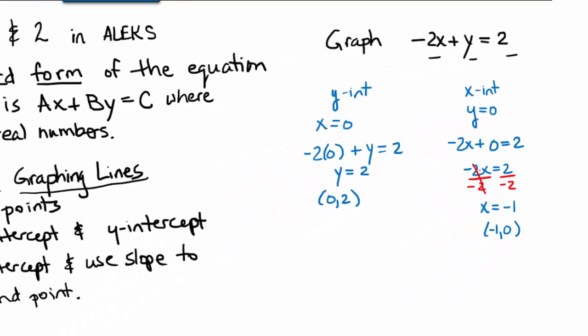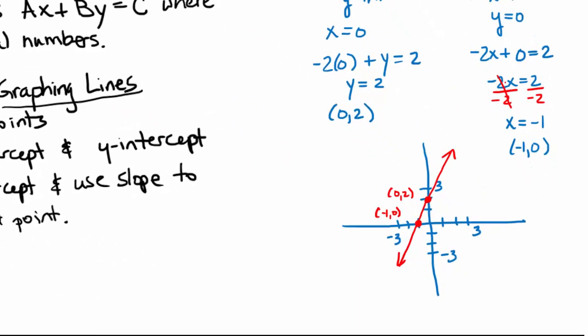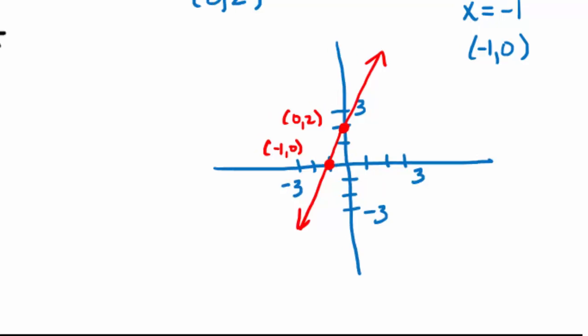By plotting the point (0, 2) and the point (-1, 0) in the x-y coordinate system, we can connect the points and get this line. This line represents all the solutions to the equation negative 2x plus y equals 2. This is a technique that we did last time in class.